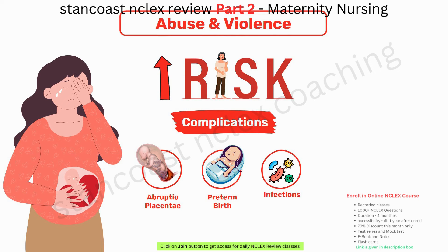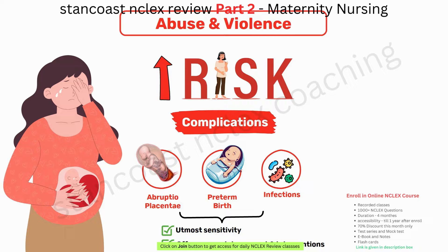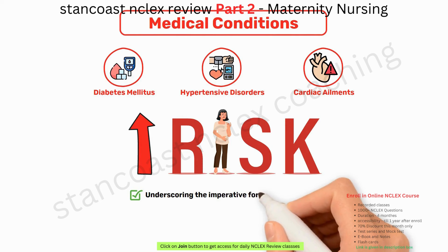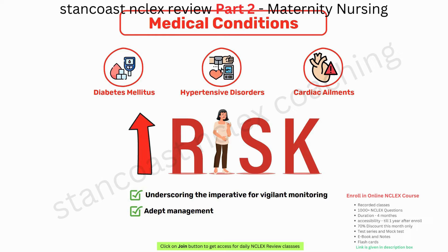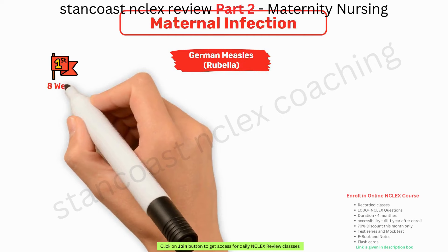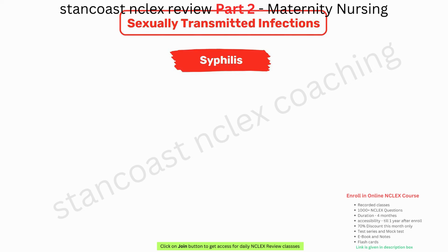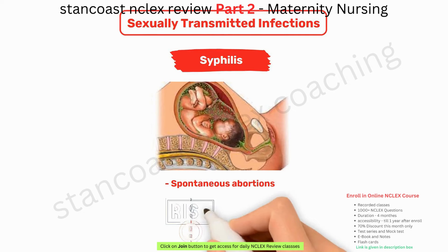Medical conditions such as diabetes mellitus, hypertensive disorders, or cardiac ailments can amplify the risks associated with pregnancy, underscoring the imperative for vigilant monitoring and management. Maternal infection with German measles (rubella) within the first eight weeks of gestation poses the highest risk of fetal infection. Sexually transmitted infections carry significant implications during pregnancy: syphilis can traverse the placental barrier, culminating in spontaneous abortions and an escalated risk of mental impairment and physical deformities.